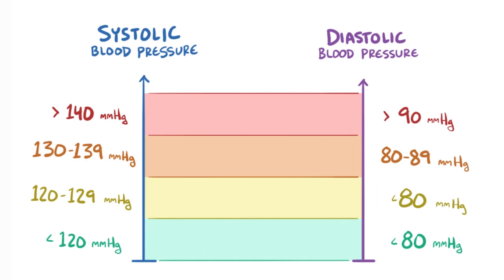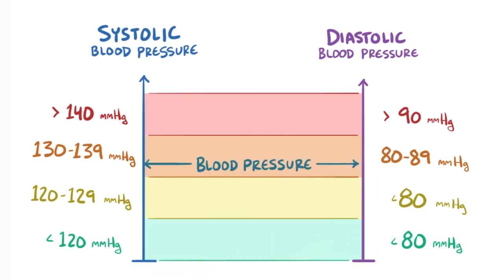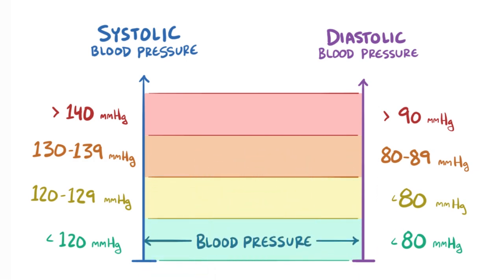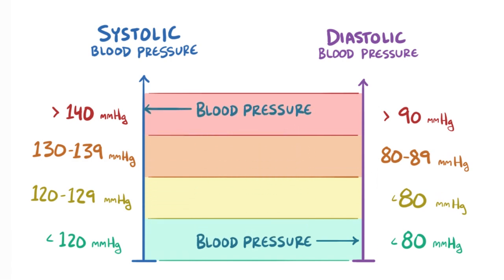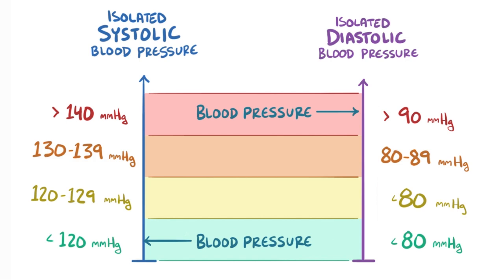Typically, both systolic and diastolic pressures tend to climb or fall together, but that's not always the case. Sometimes you can have systolic or diastolic hypertension when one number is normal and the other is really high. This is referred to as isolated systolic hypertension or isolated diastolic hypertension.